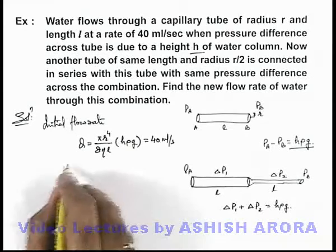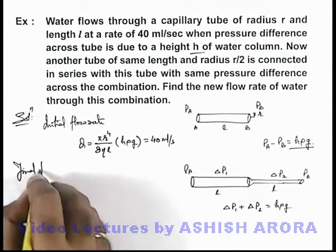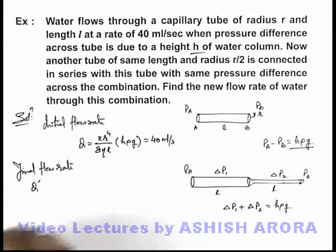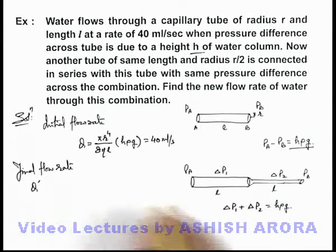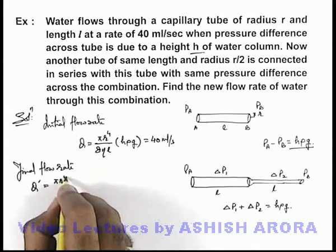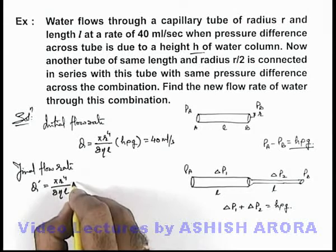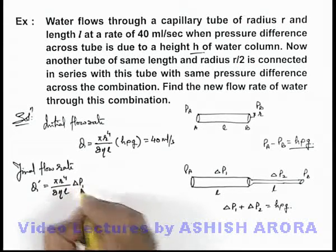If we find out the final flow rate in the second situation, say it is Q'. Then for the first capillary it can be given as π r⁴ / (8η l) times the pressure difference ΔP₁.